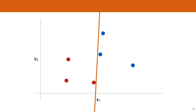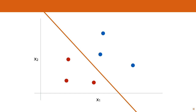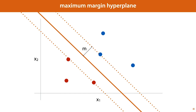If we generate new points near our existing points, they should be classified the same as the existing points. One way to accomplish this is to look at the distance from the decision boundary to the nearest red and blue points, and to maximize that. What we are looking for is the hyperplane that has a maximal distance to the nearest positive and the nearest negative point. The value m is called the margin, and this is the quantity that we want to maximize in choosing our hyperplane.